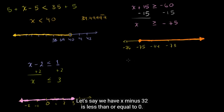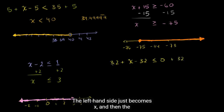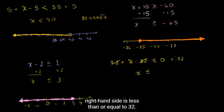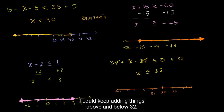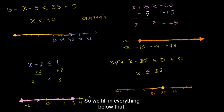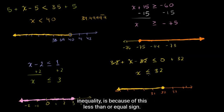Let's do one more: x minus 32 is less than or equal to 0. Add 32 to both sides — the left just becomes x, and x is less than or equal to 32. On the number line, the solution set is everything less than or equal to 32, so we fill in a solid dot at 32 and shade everything below it. The reason 32 is an acceptable solution is because of the less than or equal to sign — unlike the first example where 40 was not part of the solution set.